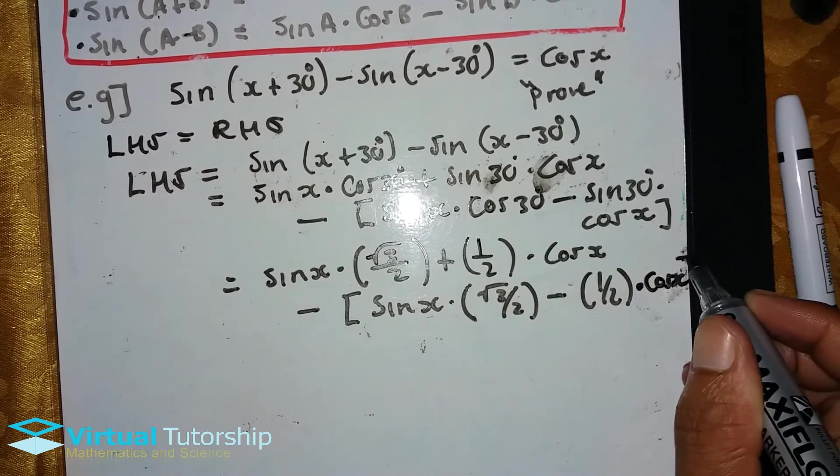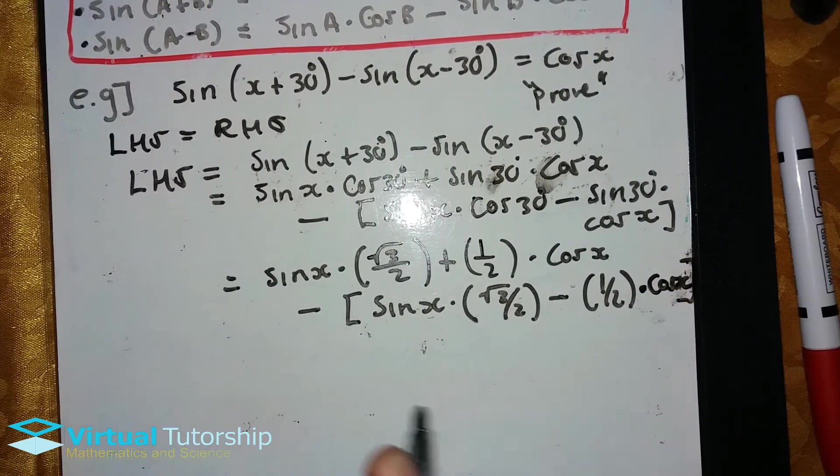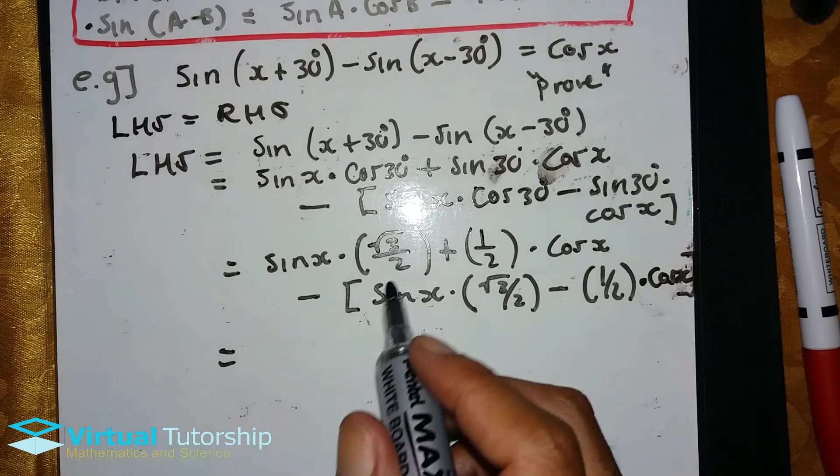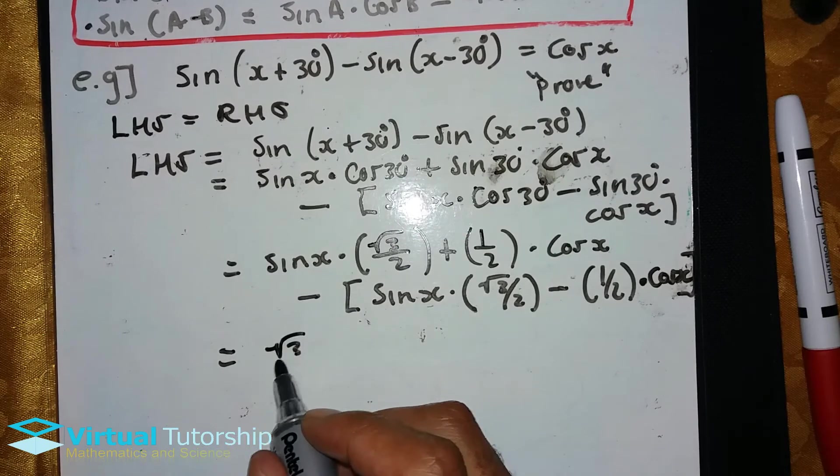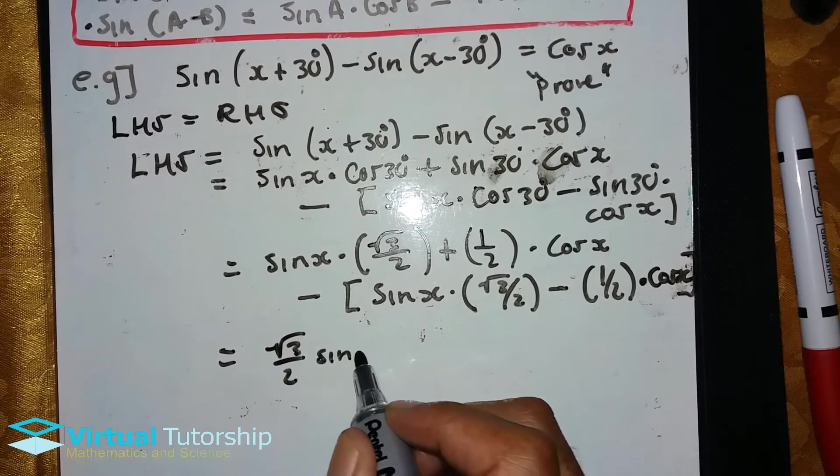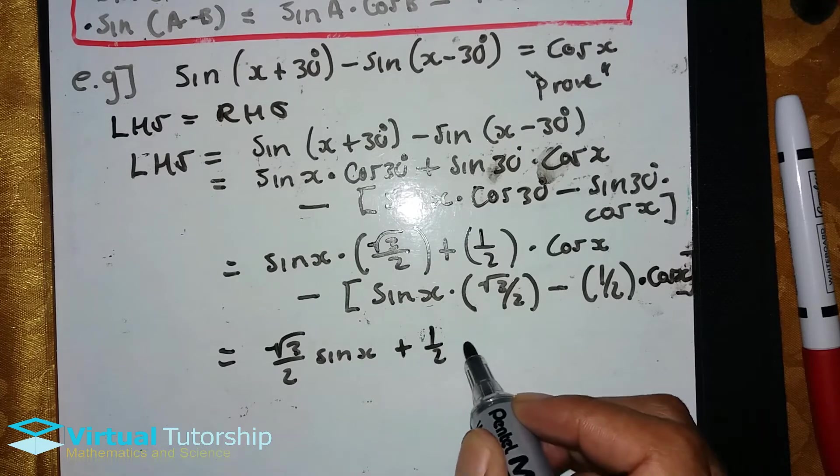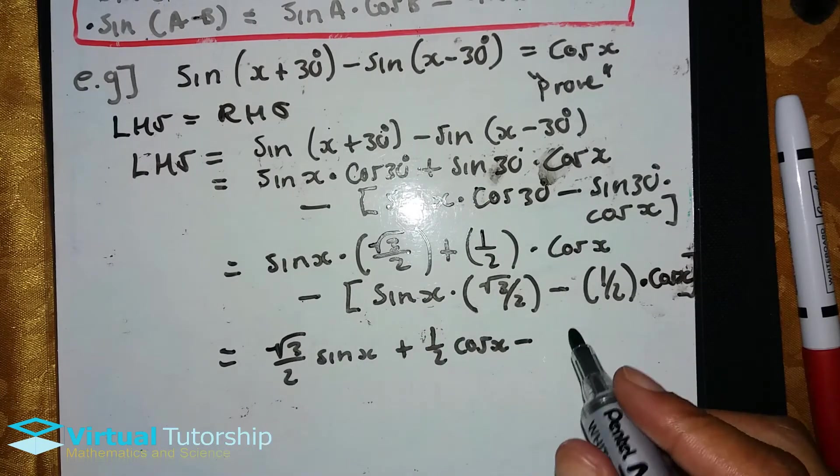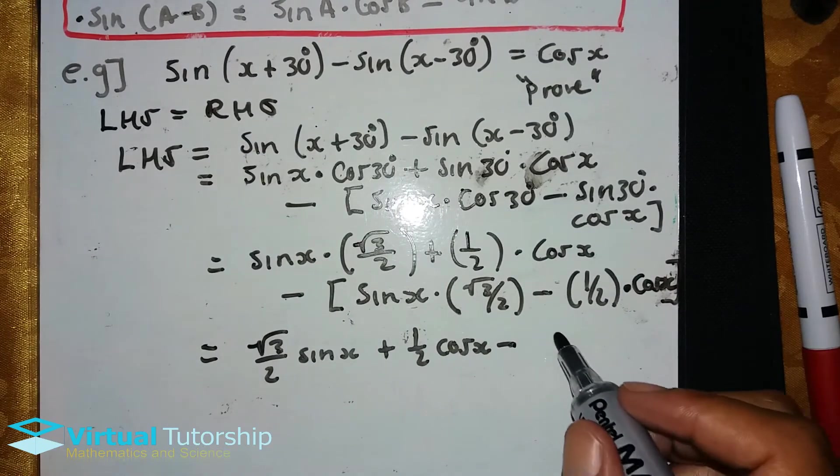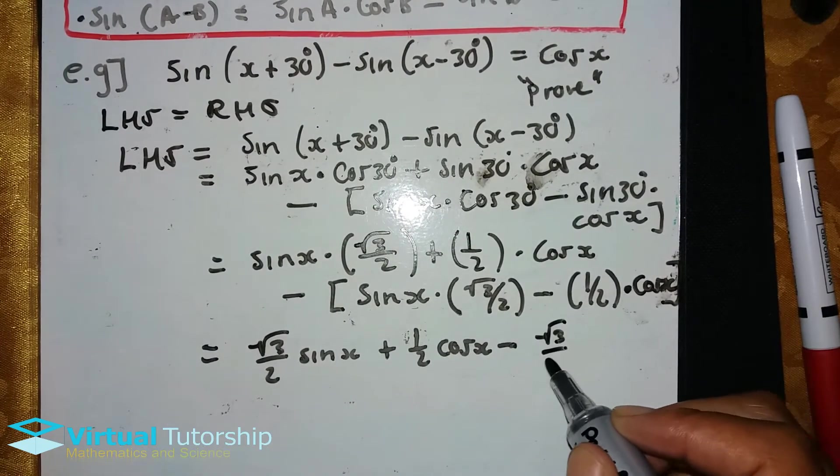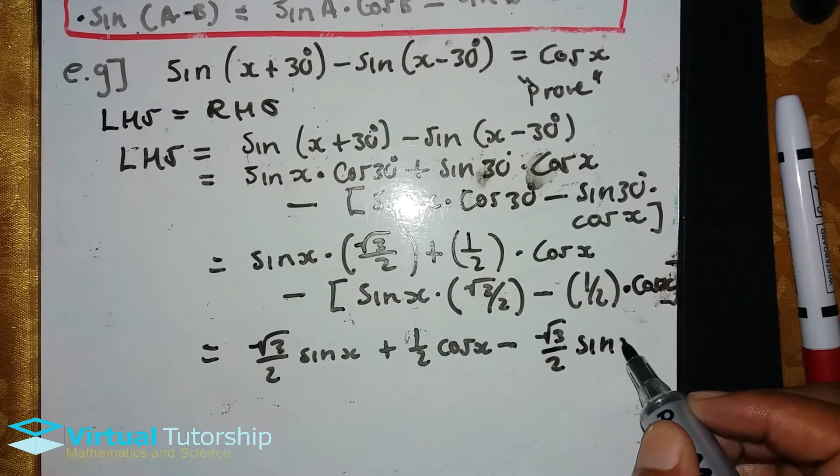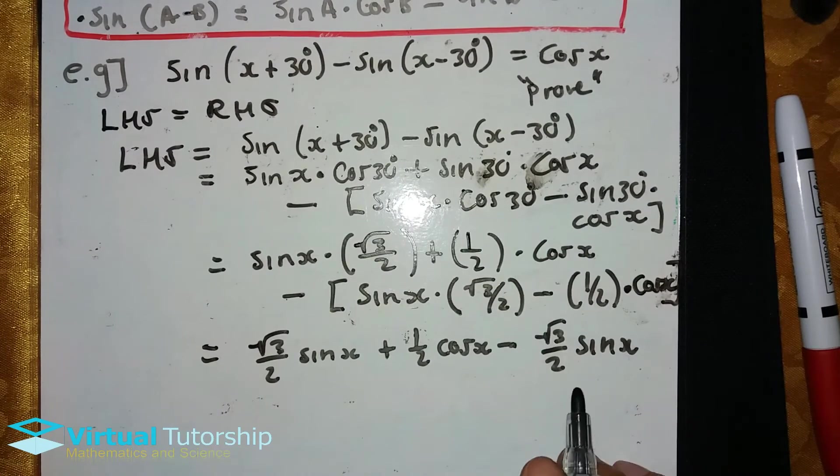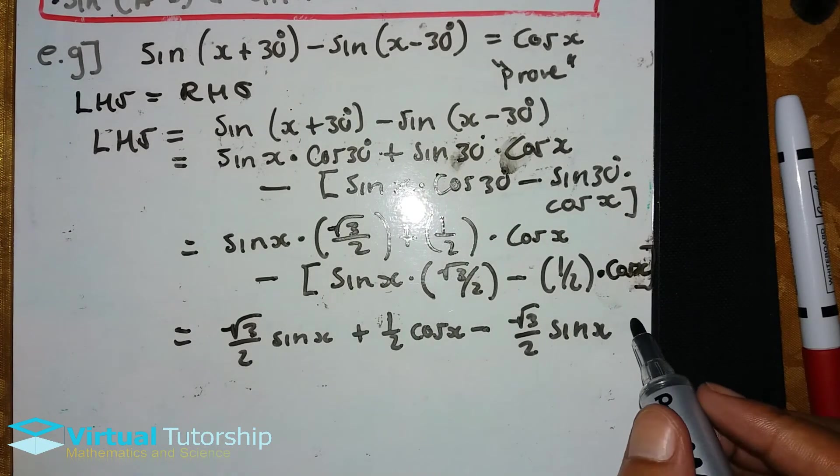Now we open the square bracket. So it's going to be square root of 3 over 2 sine x plus a half cosine x minus. This negative sign multiplies whatever is inside the bracket. So square root 3 over 2 sine x. Of course, let's prove that the left equals the right hand side.